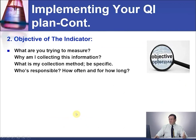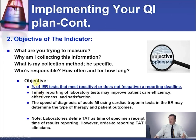So what is the objective of the indicator? What are you trying to measure? Why am I collecting this information? What is my collection method to be specific? Who's responsible? How often? And for how long? The objective will be the percentage of ER tests that meet — positive — or do not meet — negative — reporting deadlines. The turnaround time for laboratories is from receiving the sample in the lab until result reporting.